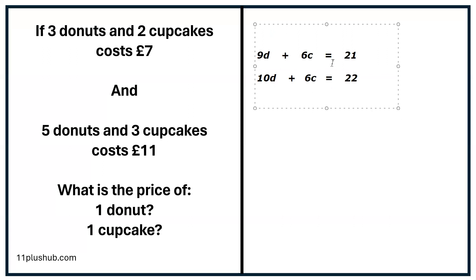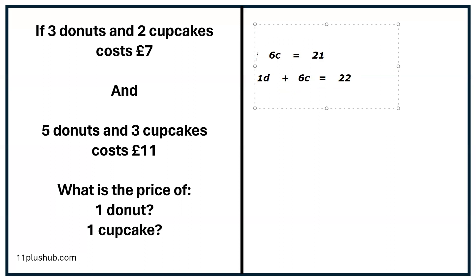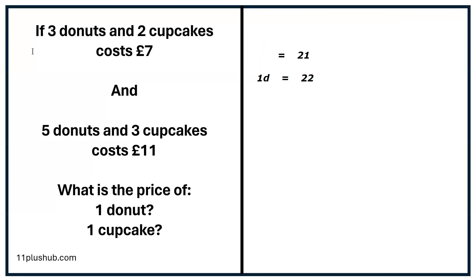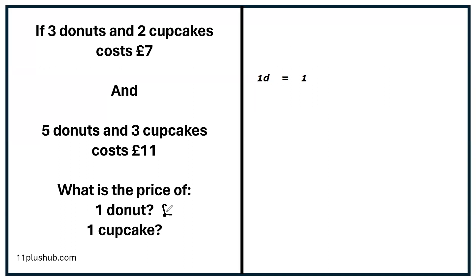We're left with 9d + 6c = 21 and 10d + 6c = 22. Now what we're going to do is subtract the lesser from the greater. So 21 is less than 22, so we take 9d away from 10d — that leaves us 1d. 6c take away 6c — nothing left. And 22 take away 21 gives us 1. So what we're left with says 1d = 1. In other words, one doughnut equals one pound — it literally tells us the answer.